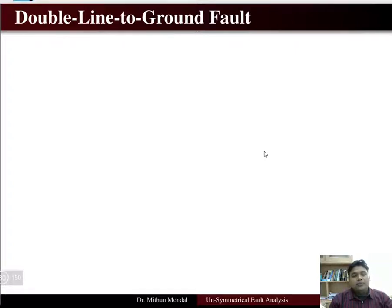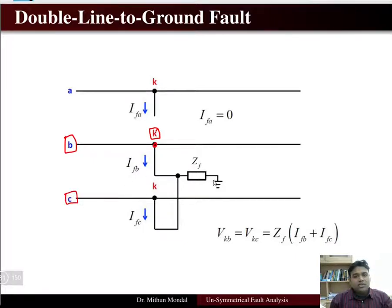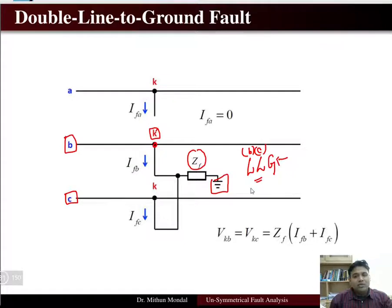Welcome to lecture 44 of Electric Power Systems. In unsymmetrical fault analysis, we are going to discuss the double line-to-ground fault. Here we can see that there is a fault occurring at bus number k in phases b and c. The line-to-line fault is associated with a fault impedance Zf, and such a fault is known as a double line-to-ground fault because two lines and a ground are associated with the fault.